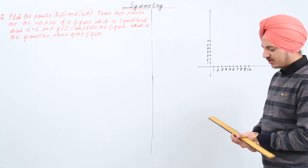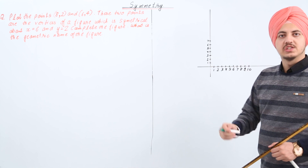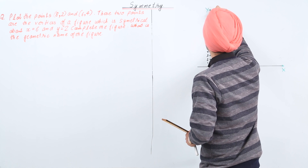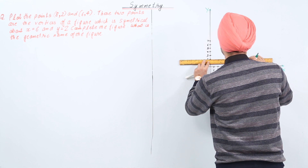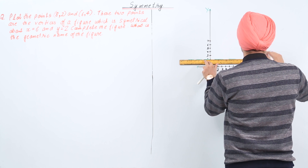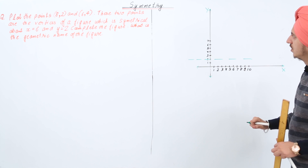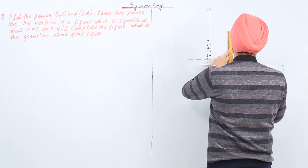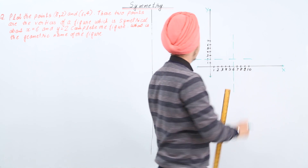First, I will draw the two lines of symmetry: x = 6 and y = 2. The line y = 2 is going to be parallel to the x-axis and crossing the y-axis at 2. So this here is the line y = 2. Then we draw x = 6, which will be parallel to the y-axis and cutting the x-axis at 6. So this is x = 6.